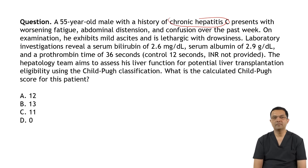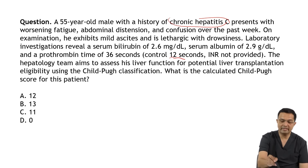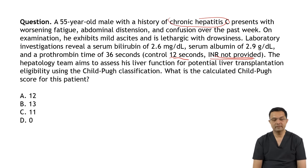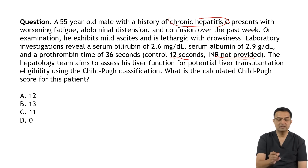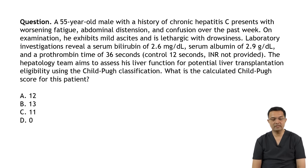He is lethargic with drowsiness. Laboratory investigations reveal serum bilirubin of 2.6 mg/dL, serum albumin of 2.9 g/dL, and prothrombin time of 36 seconds with control 12 seconds; INR is not provided. The hepatology team aims to assess liver function for potential liver transplantation eligibility using Child-Pugh classification. What is the calculated Child-Pugh score for this patient? Options: 12, 13, 11, or 10.